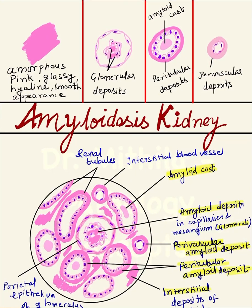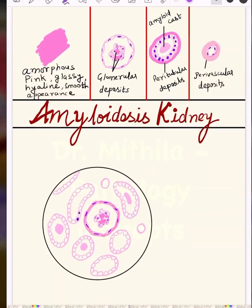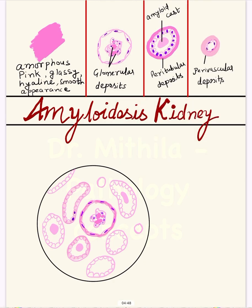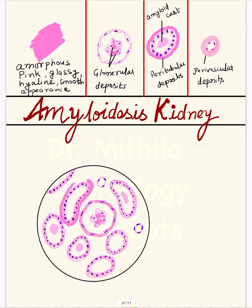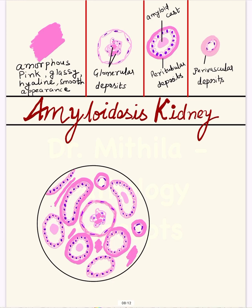The most common cause of amyloid kidney is the AL amyloid protein, seen in cases of multiple myeloma. The light chain proteins form amyloid protein in the lumen of the tubules, seen as amyloid casts. You make these casts in the center of the tubules in the diagram. Then you make the pink cytoplasm, the nuclei of the tubules, blood vessels lined by endothelium, amyloid deposits in the peritubular area, and interstitial deposits around the blood vessels.